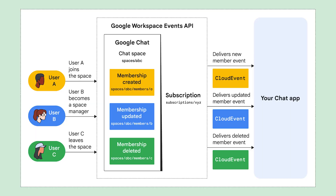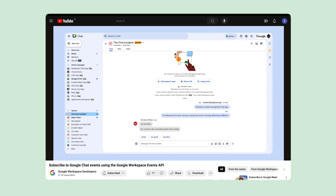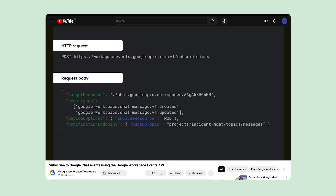Let's have a look at two examples to identify when to subscribe to events versus when to query for events. In the first example, a chat app wants to send a welcome message to users as they join the space to explain the space guidelines or share tips about how to effectively use the chat app. To receive events in real time, the chat app calls the Google Workspace Events API subscriptions.create method to subscribe to the space for all types of membership events. After creating the subscription, the chat app can start processing membership events. If you want to learn more about how to work with the Google Workspace Events API, check out the video 'Subscribe to Google Chat Events' linked in the description below.